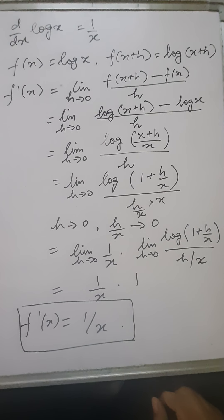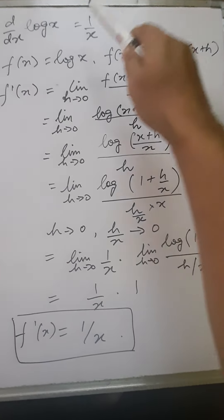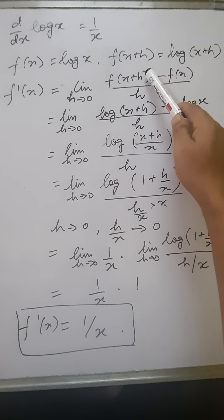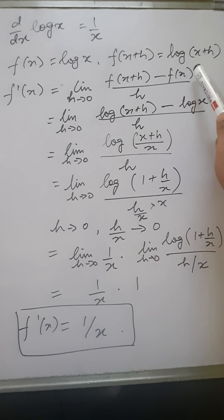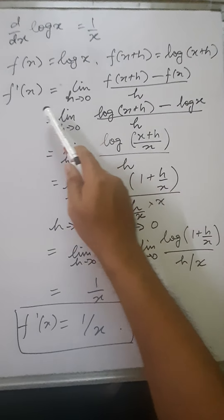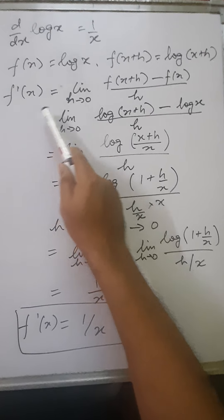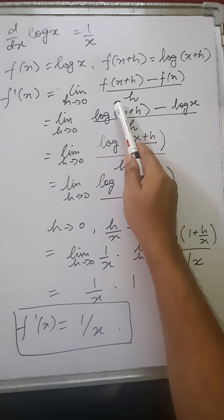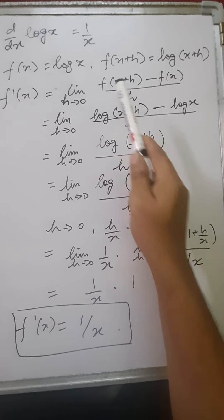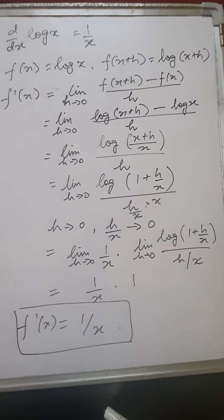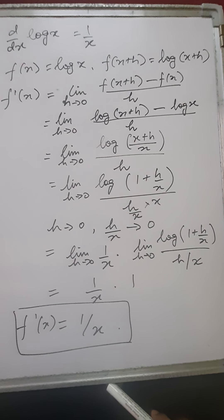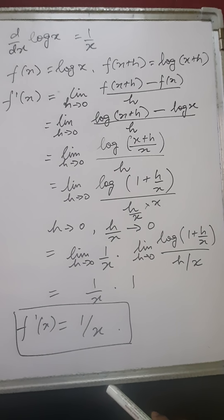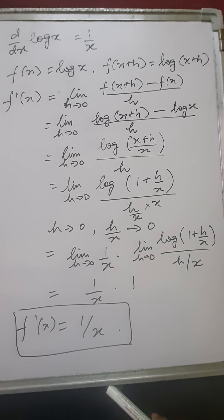Suppose the function is f(x) equals log x, so f(x+h) will be log(x+h). From the first principle, the formula is f'(x) equals limit h tends to 0 of f(x+h) minus f(x) upon h. So this becomes limit h tends to 0 of log(x+h) minus log x, all upon h.